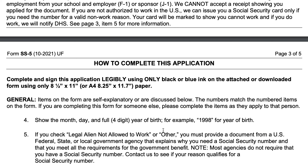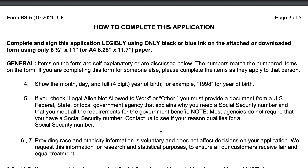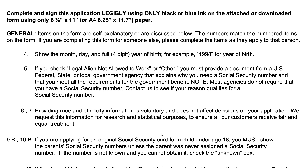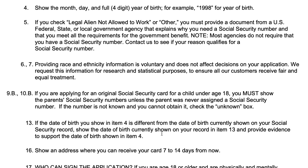Page 3 contains general instructions on how to complete the application. Use only blue or black ink. Download this on 8.5 by 11 paper — that's the standard printer size. Follow the instructions completely, for example entering your four-digit year of birth instead of just a two-digit year. You don't have to provide your race or ethnicity information; it doesn't affect any decisions and is for research and statistical purposes only.